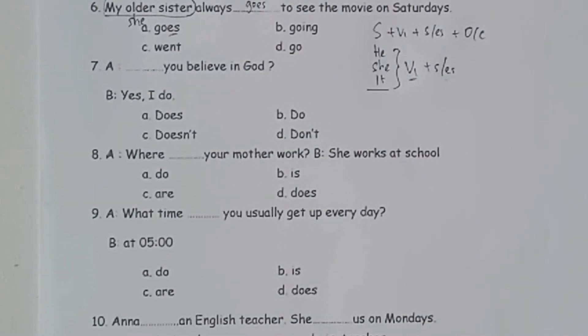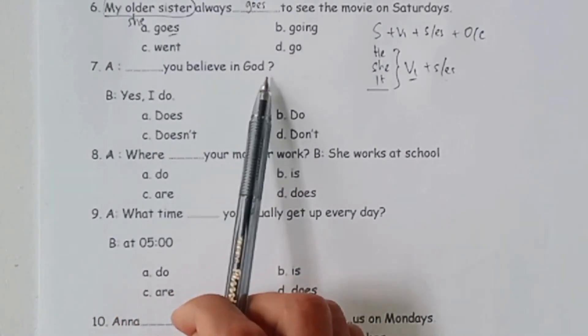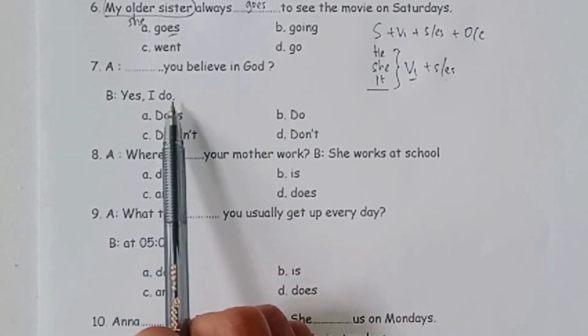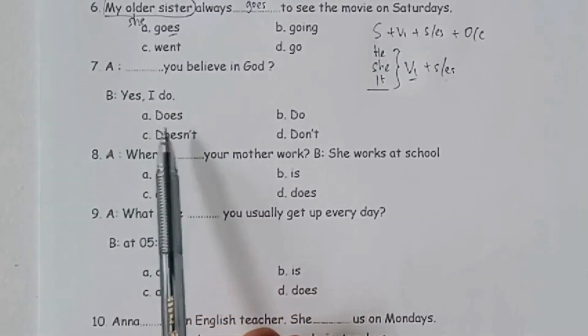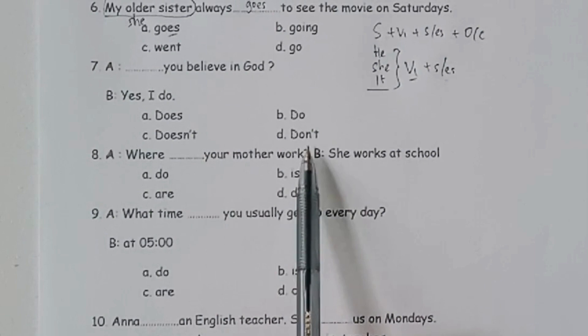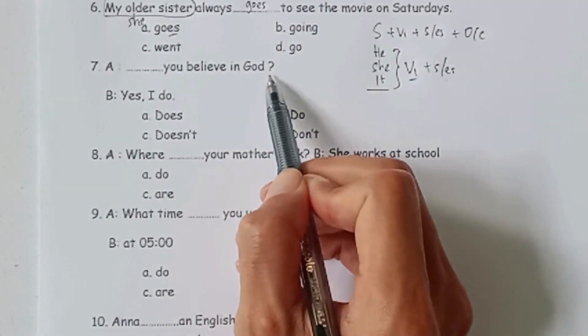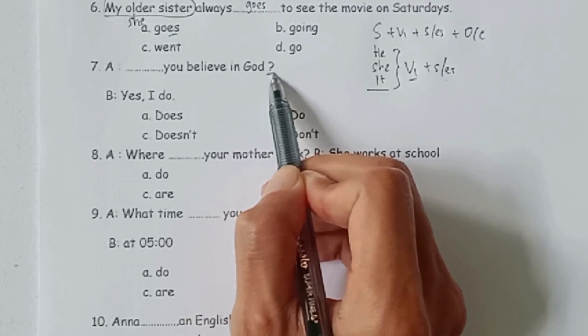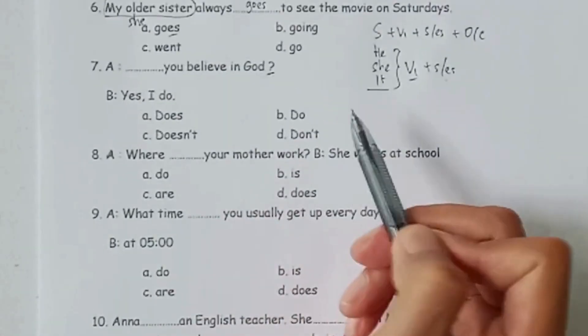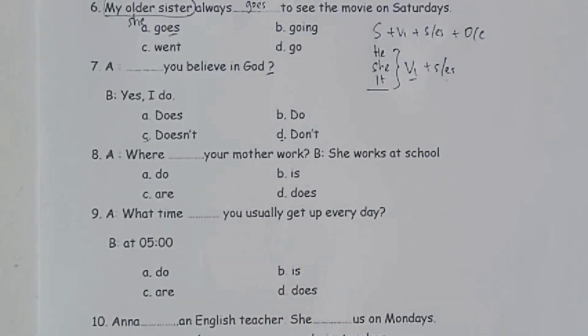Soal nomor tujuh, ada sebuah percakapan. A bertanya, titik-titik you believe in God? B menjawab, yes I do. Pilihan jawabannya does, do, doesn't, or don't. Karena ini ada tanda tanya, maka sudah pasti kalimat yang dibutuhkan adalah kalimat tanya. Otomatis C dan D kita bisa eliminasi.